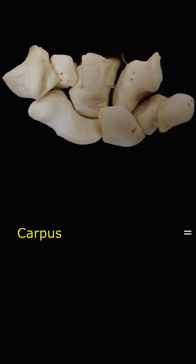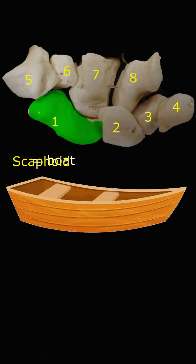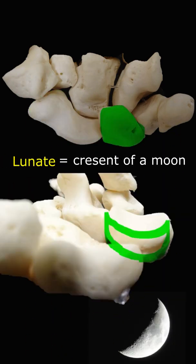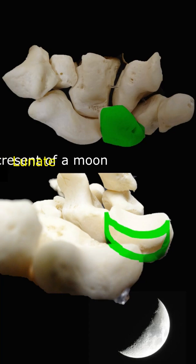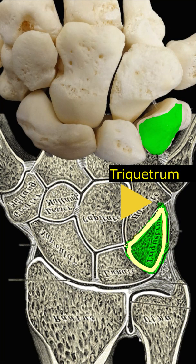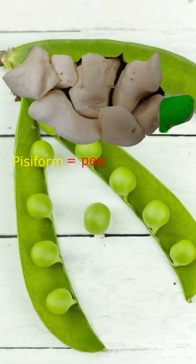The carpus, in Latin meaning wrist, contains eight bones arranged in two rows. The scaphoid is derived from its shape, like a boat. The lunate indicates its shape like a crescent of a moon. The triquetrum in Latin means three corners, making out a triangular, three-cornered shape. The pisiform is the small carpal bone which means shaped like a pea.